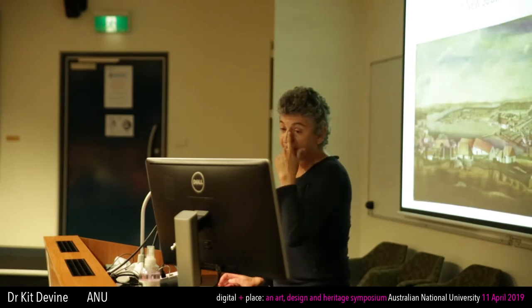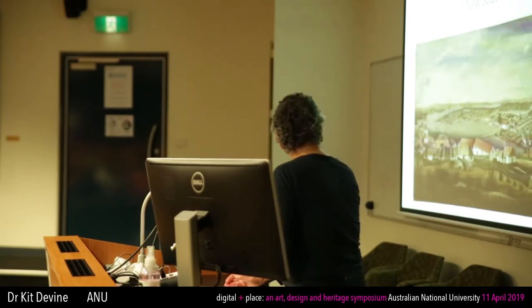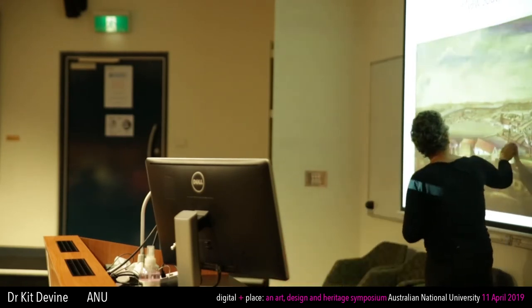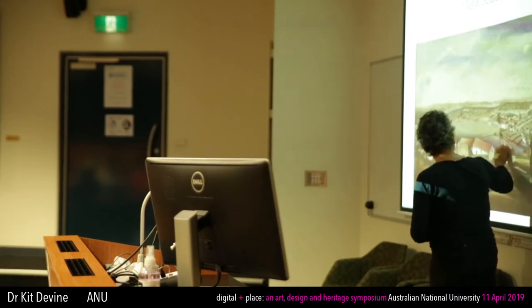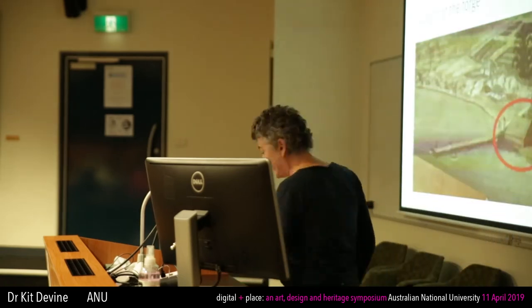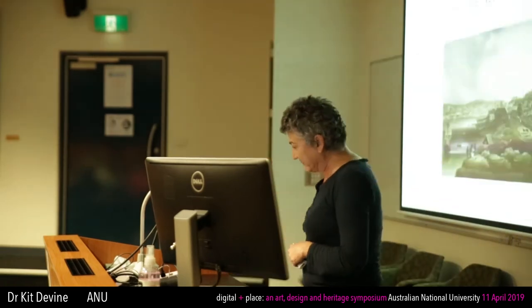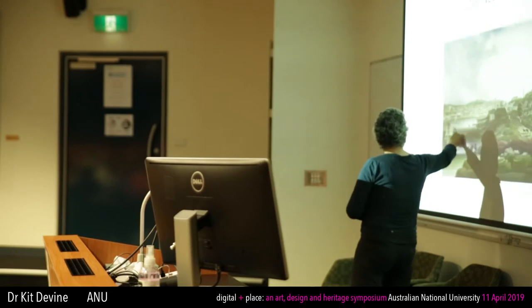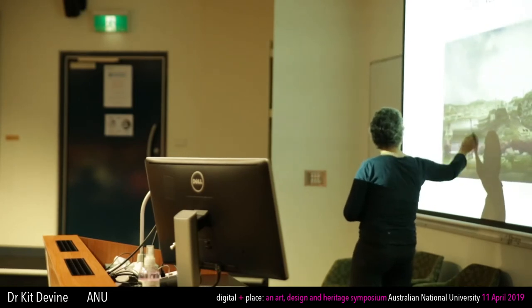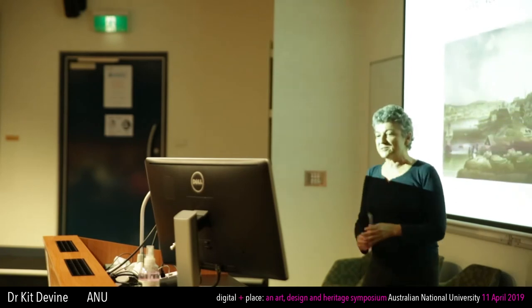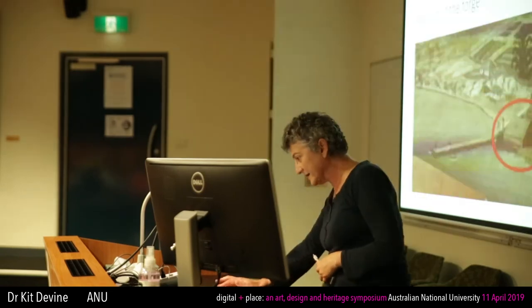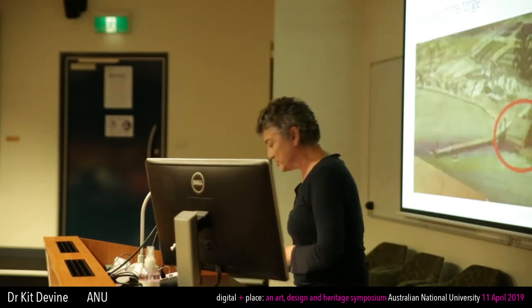Here we have a painting showing Sydney in about 1800. I want you to pay close attention to this area — a big white building, a jetty, and there's a low building here that's been identified as the forge. But this painting from 1804 also shows the jetty and the big white building, but the forge is over here. So here we can see the forge is quite far away from the jetty, but in the other painting it's right next to the jetty.